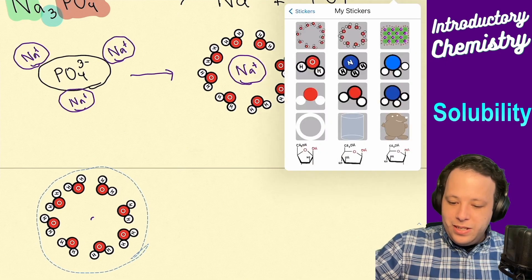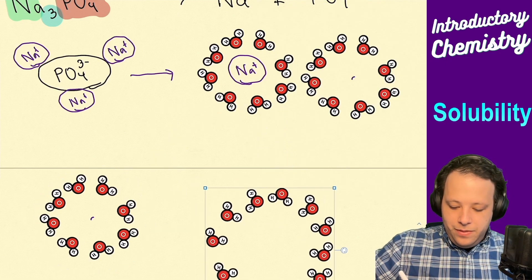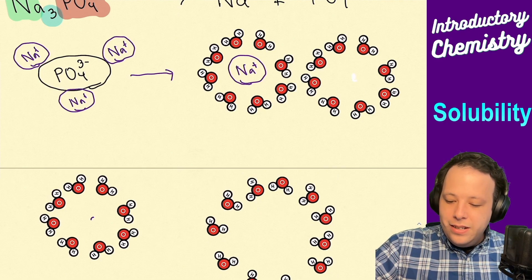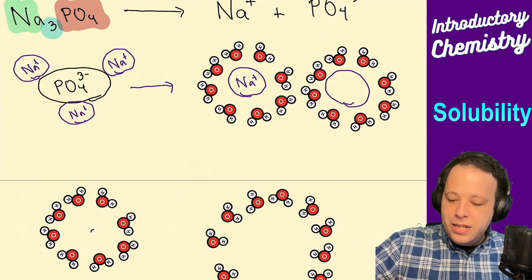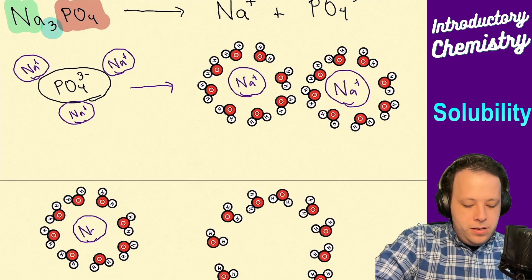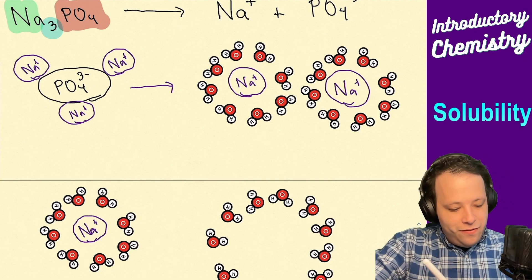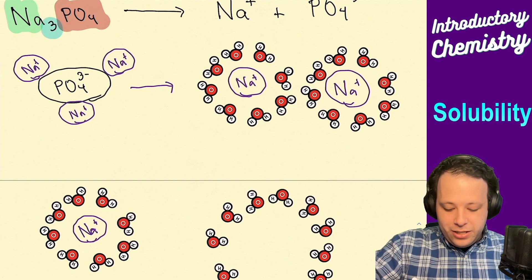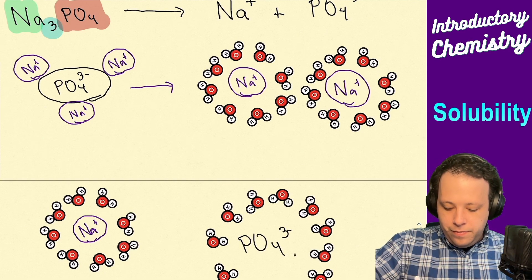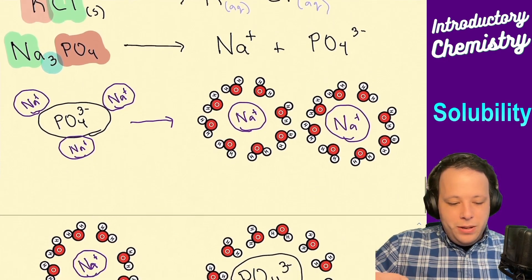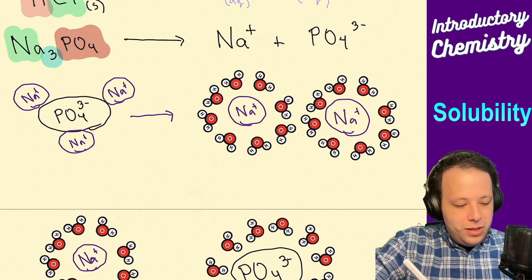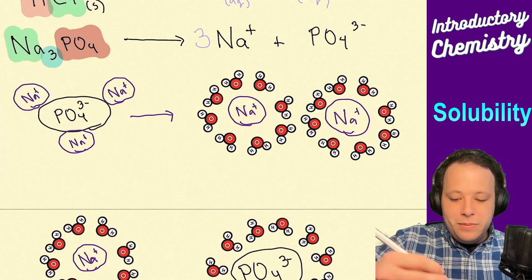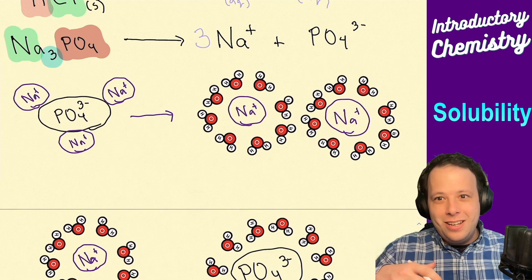Similarly, the phosphate is also surrounded by water. When we write this as a balanced chemical equation, we show three sodiums and one phosphate. Now let's check — is this compound even soluble to begin with?